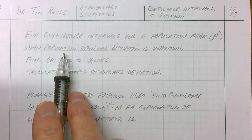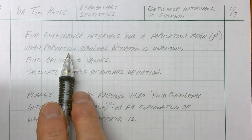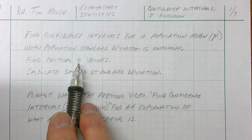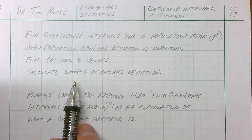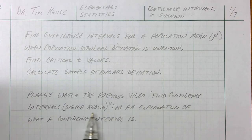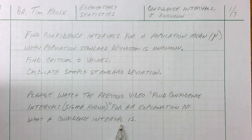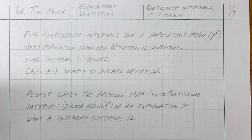If we know what sigma is, we use the z-score. If we don't know the population standard deviation, we use t-values and calculate a sample standard deviation. There is a previous video on finding confidence intervals when you know sigma, which has a longer explanation of what a confidence interval is, so you might want to watch that first.